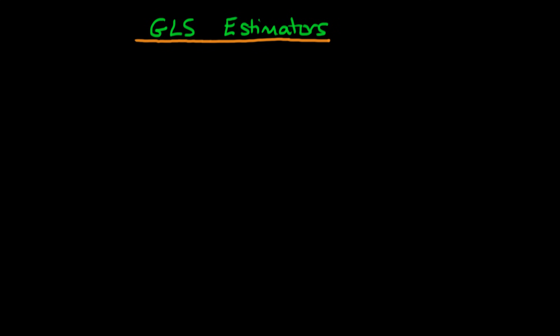In this video we're going to derive the explicit form of GLS estimators. Remember what GLS is: we have our original model y = Xβ + u, and we transform it by multiplying both sides by our transformation matrix, which is equal to the variance-covariance matrix to the power of minus one-half.